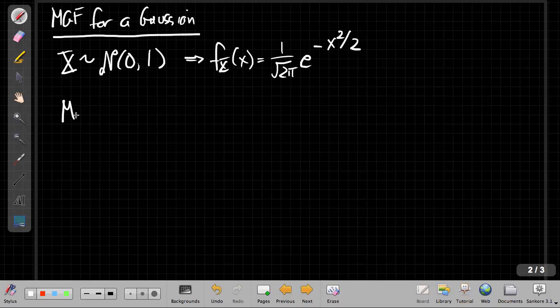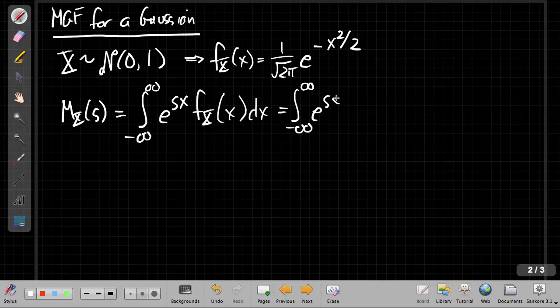And so I'm going to start from my definition: the moment generating function Mx of s is the integral from minus infinity to plus infinity of e to the sx, and it's the expected value of e to the sx. So I plug this in for f of x dx. If I put that f of x in, I get e to the sx, 1 over square root 2π, e to the minus x squared over 2.